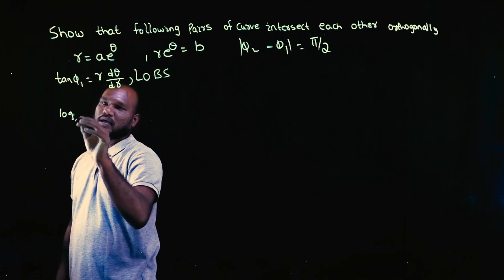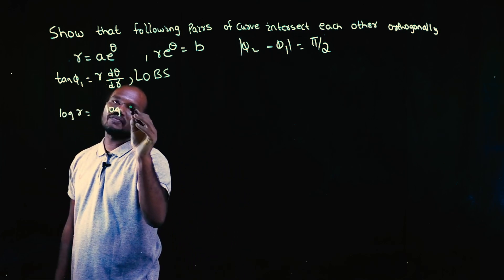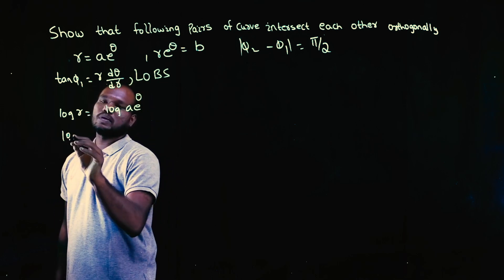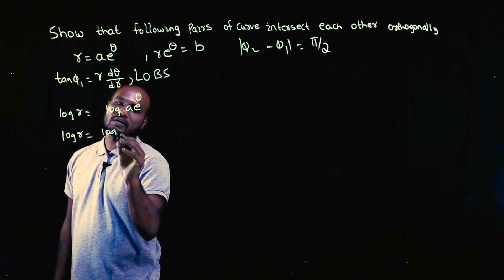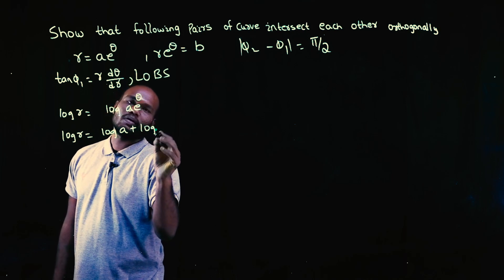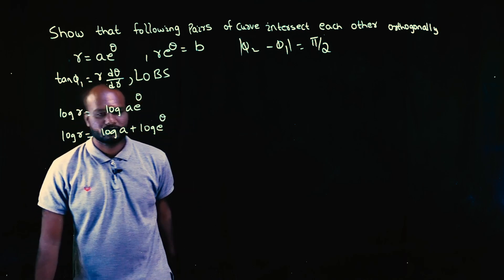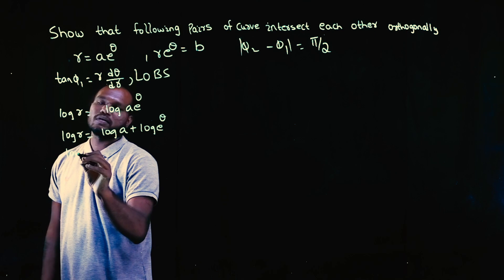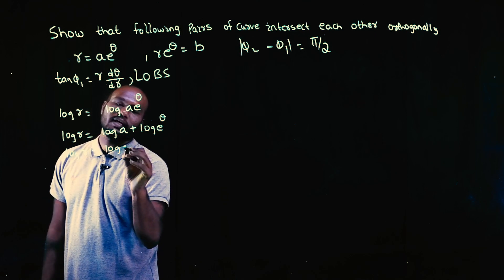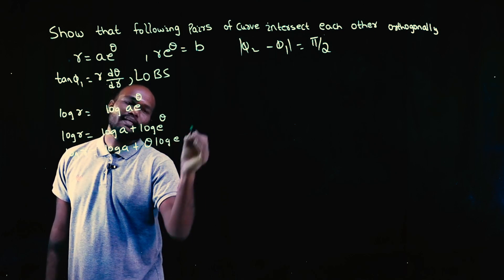So log r is equal to log of a e^theta. So log r is equal to log a plus log e^theta, right? We can take log r is equal to log a plus theta times log e.